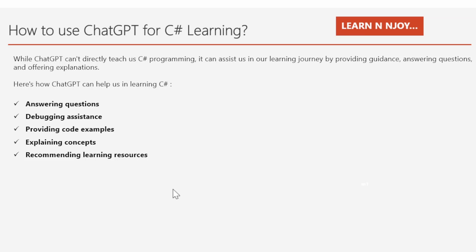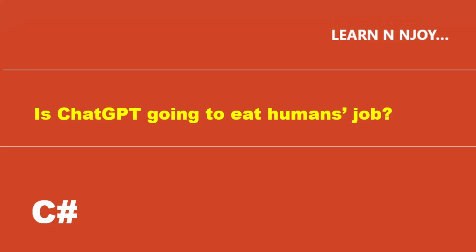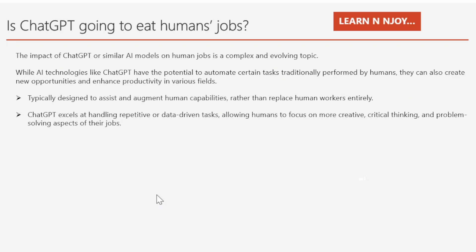Use ChatGPT wisely. Is ChatGPT going to eat human jobs? The answer is complex. While AI technology like ChatGPT has the potential to automate certain tasks traditionally performed by humans, it can also create new opportunities and enhance productivity in various fields. ChatGPT is designed to assist and augment human capabilities rather than replace workers entirely. It excels at handling repetitive or data-driven tasks, allowing humans to focus on more creative, critical thinking, and problem-solving aspects of their job.